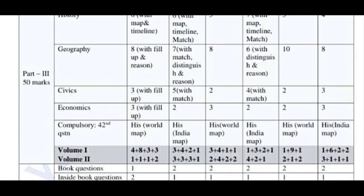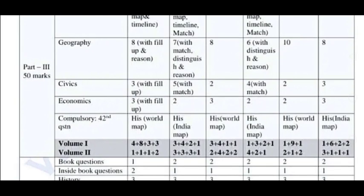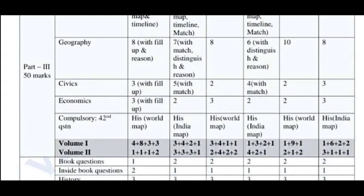One time it is the history map, and another time it is the Indian map. That's why you look at the world map and India map alternating. Across PTA 1, 2, 3, 4, 5, and 6, you can see the map questions. More or less, you can see the history map. That's why you should look at Volume 1 and Volume 2 for map preparation.